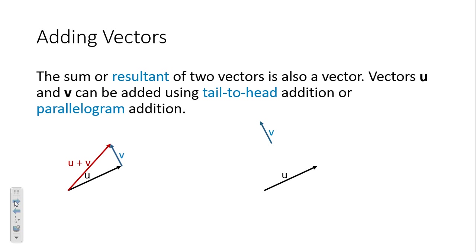The parallelogram method places U and V with the same tail, then you draw a parallelogram and find its diagonal — giving you the same result. Both methods work — you can start with one and tack on the next, or start both at the same initial point and find the diagonal.